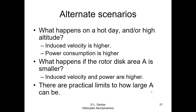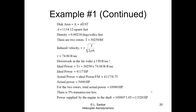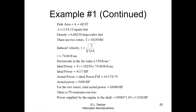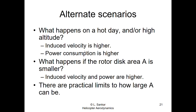On a hot day or at high altitude, density goes down (from P = rho R T), so induced velocity goes up, and both ideal and actual power increase. If the rotor disc is smaller, the same thing happens. The vehicle should be designed for one-engine-out condition - one engine failed, but the other still powers both rotors to produce thrust from each rotor, preventing the vehicle from rolling and crashing. There are practical limits on how large a disc area you can use: a larger main rotor requires a longer tail boom for clearance, shifting the center of gravity and making the vehicle unwieldy.